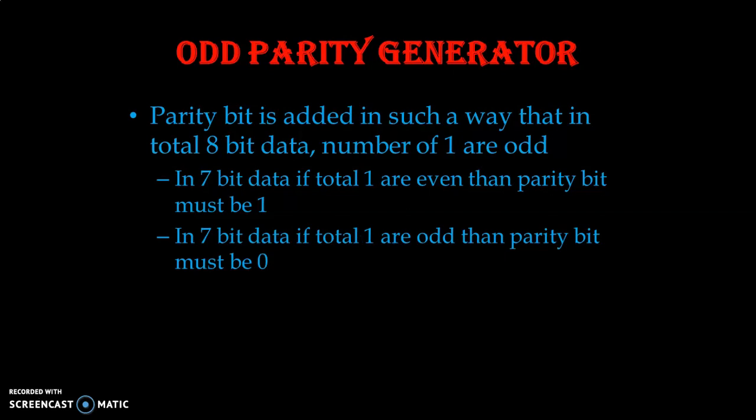Same way, in 7-bit data if the total number of 1s are already odd, then the parity bit will be 0. So in the odd parity generator, the number of 1s in the total 8-bit data should always be an odd number. If it is not odd, the parity bit is added in such a way to make it odd.